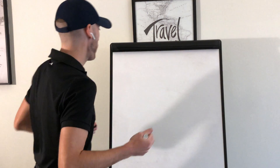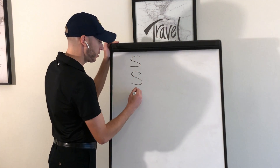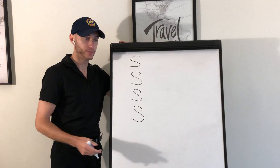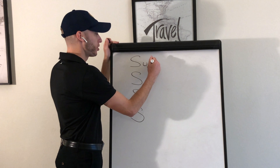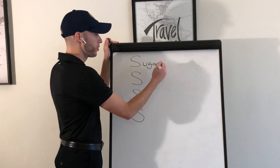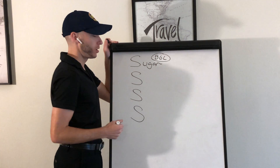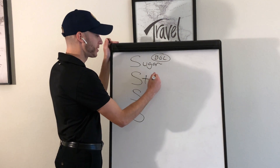Let me show you what it looks like. There are four S's in altered mental status — these are the four things we can't miss. Number one is Sugar. What do we do? Check a blood sugar.